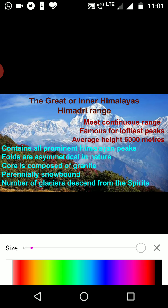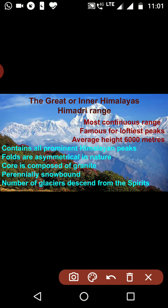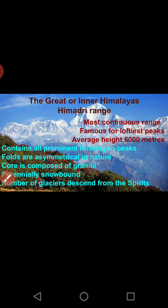Asymmetrical means not equal on both sides — unlike a perfect symmetrical triangle. In Himalayas, no single hill is completely symmetrical; they are all overlapping. These are perennially snow-bound — Himadri is covered with snow throughout the year — and as a result, most glaciers descend from this range.